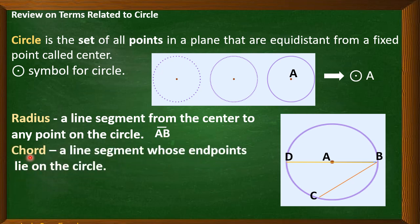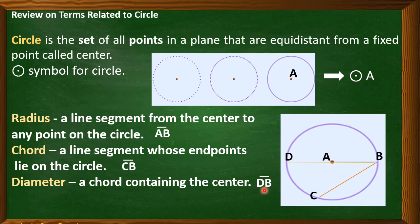Next, chord. A chord is a line segment whose end points lie on the circle. Based on our figure here, we have line segment BC or line segment CB. We also have here a diameter. A diameter is a chord containing the center. This is a special chord because it contains the center, and it is the longest chord. So in here, our diameter is line segment DB or line segment BD.